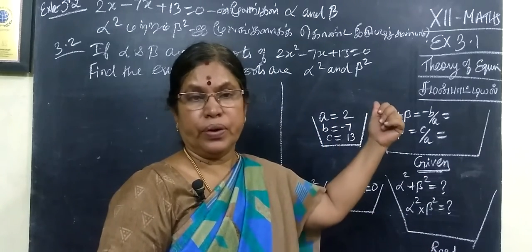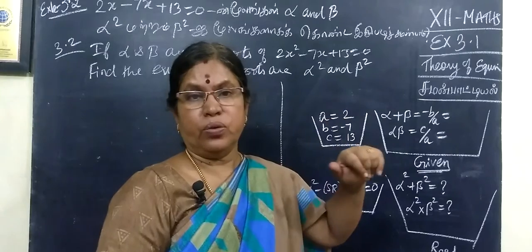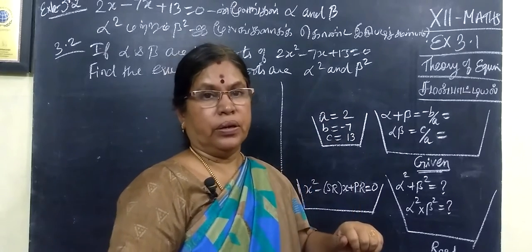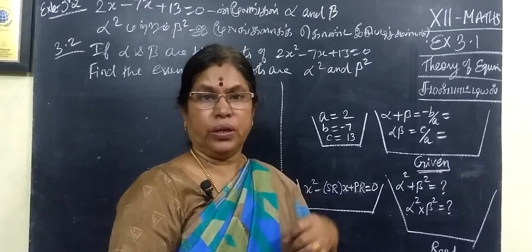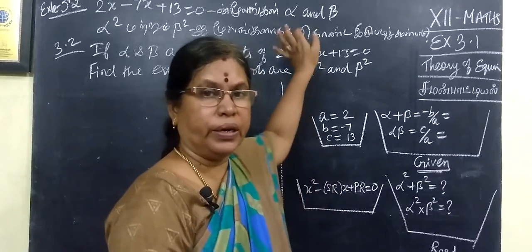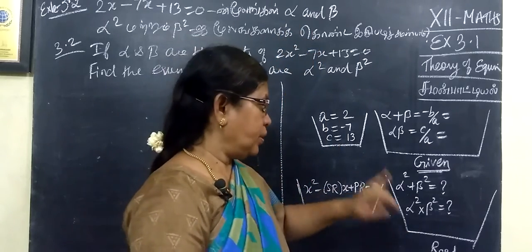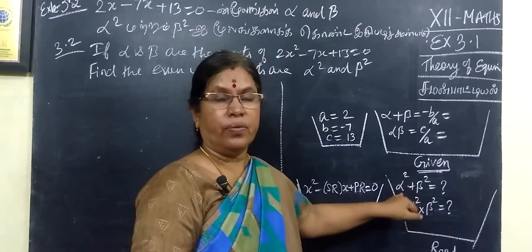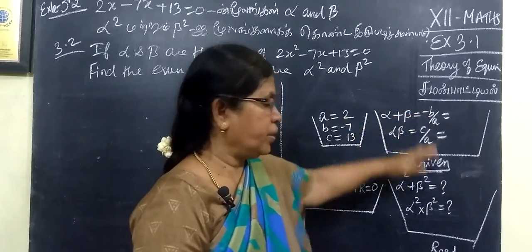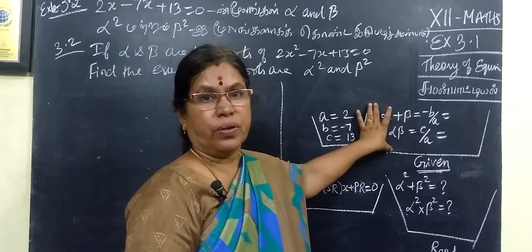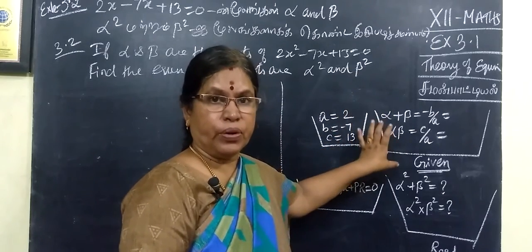You are given an old quadratic equation whose roots are alpha and beta. If you want to find new roots that are alpha squared and beta squared, what is the use of this? This is the sum of the root and the product of the root.